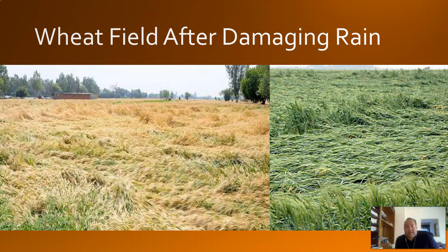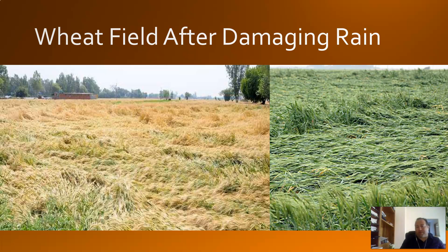The pictures here show what a wheat field looks like after a damaging, heavy rain. You can see how beat down the wheat is and how much water has gone into that system. You can start to see where a rill might form in that sort of area — you can kind of see where the channel would start to go because you can see where the water was flowing when it was heaviest.